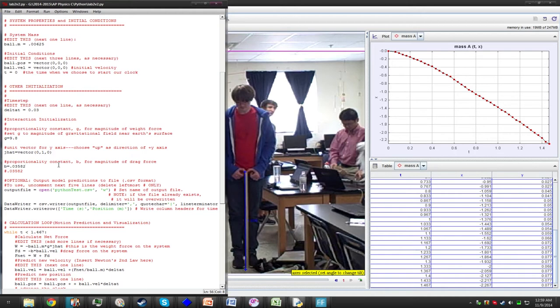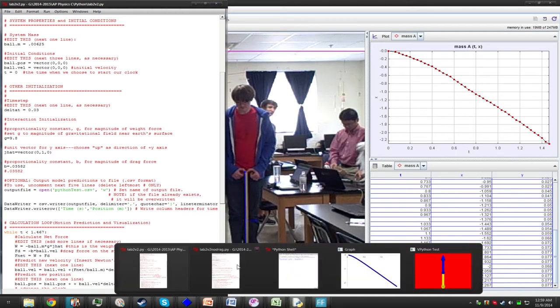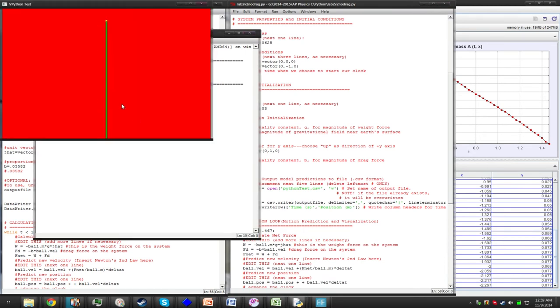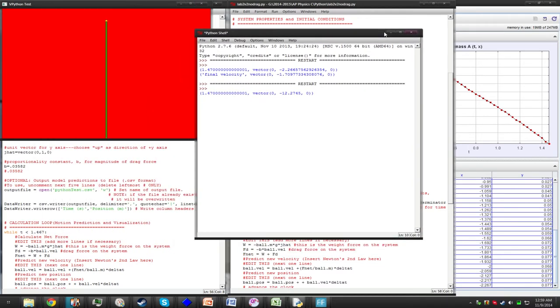To show how important b, the drag coefficient, is, I have made a code without it, which has a very different result. There is no drag, there is only mass times gravity, and this gives us a final position much greater than should be expected.